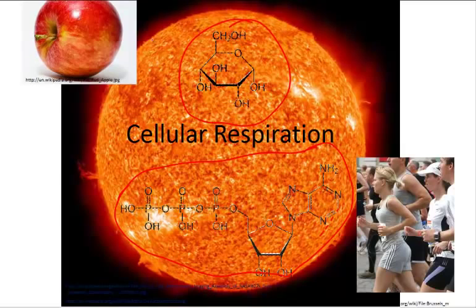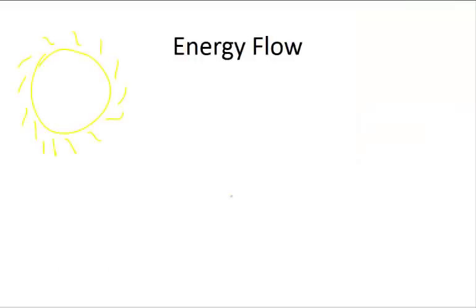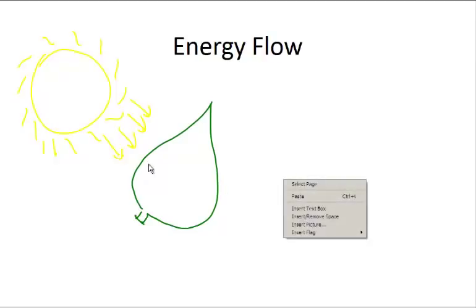Before we can talk about cellular respiration, however, we need to take a look at the big picture. The sun produces light energy. When that light energy reaches plants or other photosynthetic organisms, photosynthesis occurs and glucose is produced.